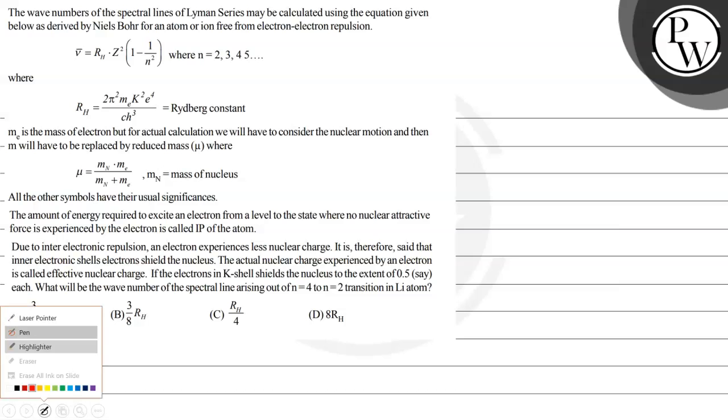Hello, let's read this question. The question says the wave numbers of the spectral lines of Lyman series may be calculated using the equation given below as derived by Niels Bohr for an atom or ion free from electron repulsion. Nu bar equals RH multiplied by Z square multiplied by 1 minus 1 by n square, where n is 2, 3, 4, and so on. Where RH is 2π square m_e k square e fourth divided by CHQ, which is Rydberg's constant.